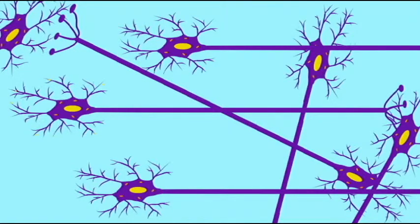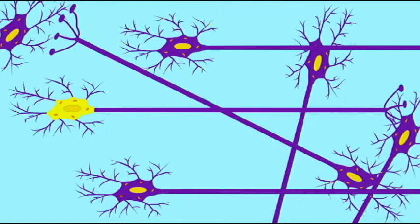Nerve cells or neurons conduct electricity. As odd as it is to consider this, what we know of as our mental processes — our thoughts, our desires, our drives, our memories — these are all based on electrical messages known as action potentials.